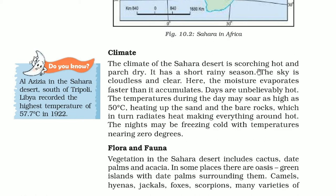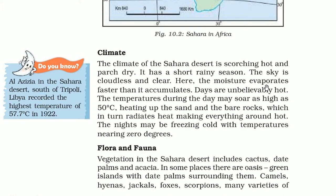The climate of the Sahara Desert is scorching heat - very hot and parched dry. It has a very short rainy season, so short that water scarcity is always present. The sky is cloudless and clear, and moisture evaporates faster than it would accumulate. Days are unbelievably hot, with temperatures going up to 50 degrees centigrade, heating up the sand and bare rocks, which then radiate heat making everything around them hot.